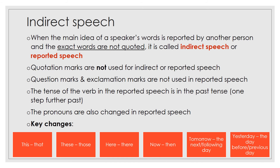Indirect speech. When the main idea of a speaker's words is reported by another person and the exact words are not quoted, it is called indirect speech or reported speech. Quotation marks are not used, and neither are question marks or exclamation marks. The tense of the verb in reported speech is in the past tense — one step further past. Pronouns are also changed. Key changes include: this becomes that, these becomes those, here becomes there, now becomes then, tomorrow becomes the next or following day, and yesterday becomes the day before or the previous day.